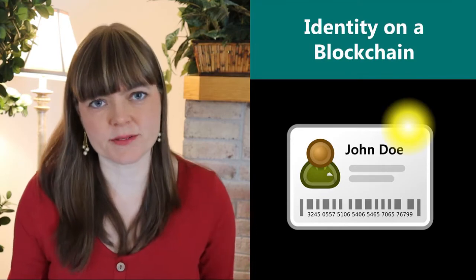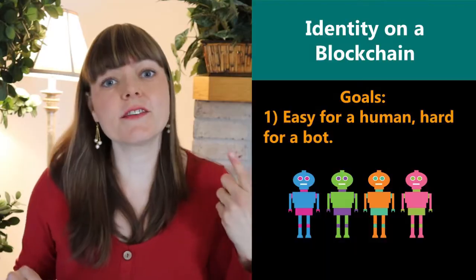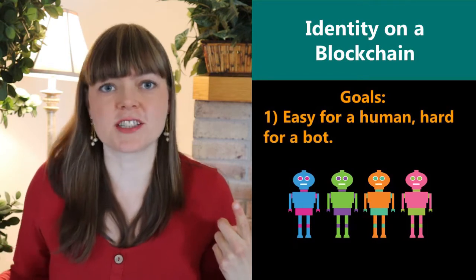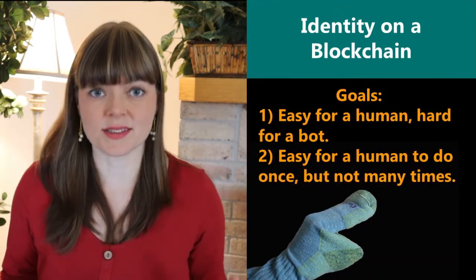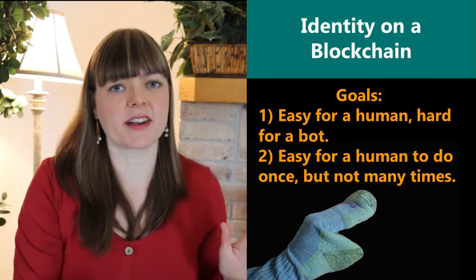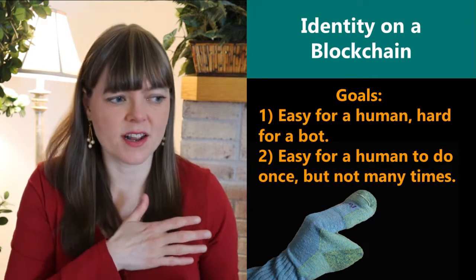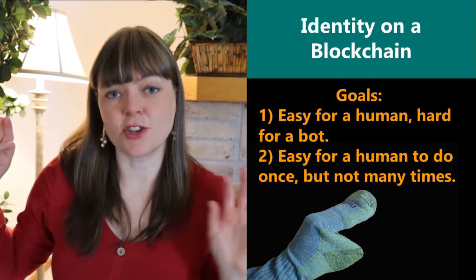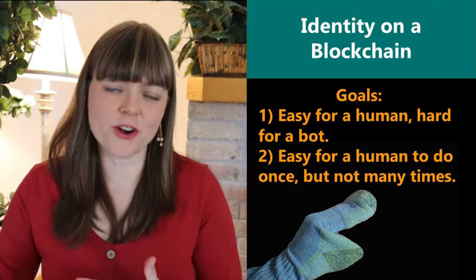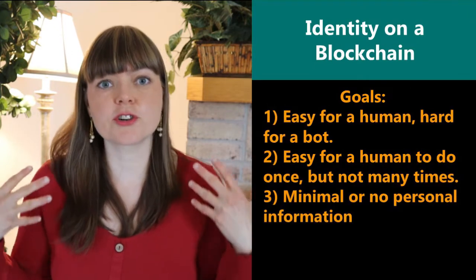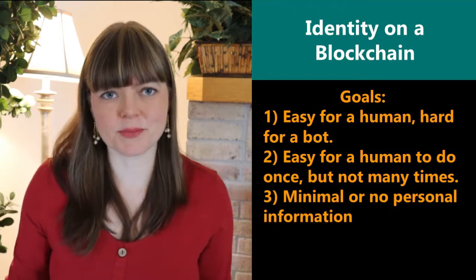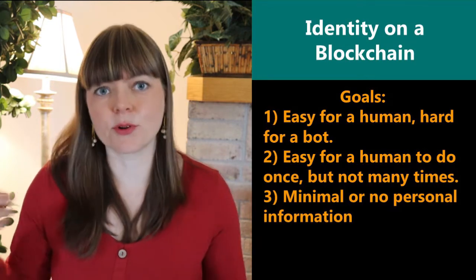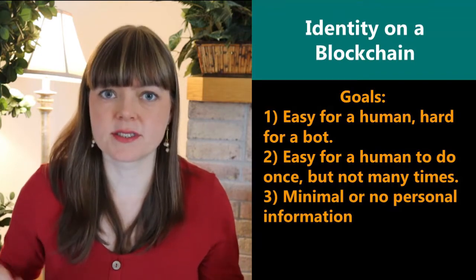This whole system needs to do this without attaching it to your real world identity or giving away too much personal information. So here are the three goals: First, it needs to be easy for humans to produce but hard for machines to produce — the anti-bot mechanism. Second, it needs to be easy to produce once but hard to create many — preventing sock puppets where one person owns many accounts. Third, it needs to involve minimal or zero use of personal identification information.